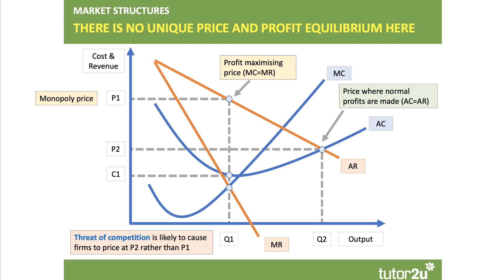So the key point is that there's no unique price and profit equilibrium in a contestable market. The threat of competition is likely to cause firms to price closer to P2 rather than P1. Due to freedom of entry and exit, existing firms always face the threat of new firms and new products entering the market. It may well be the case that the threat of entry is sufficient to keep prices closer to a competitive equilibrium and keep profits low — otherwise, new firms would enter.